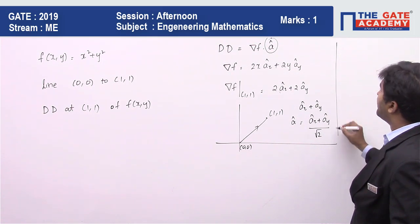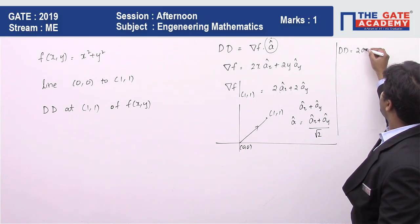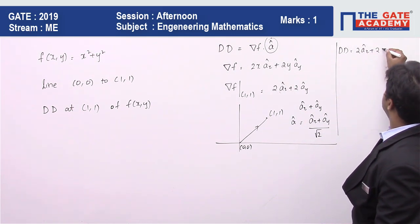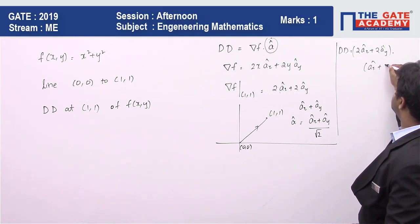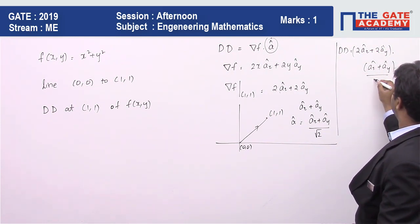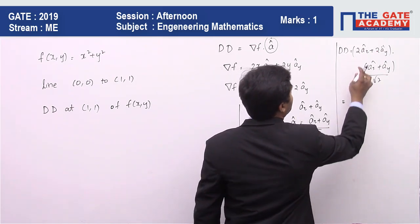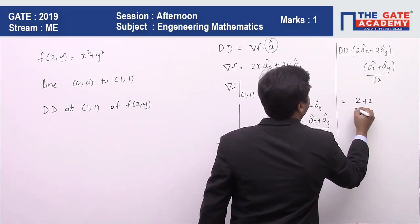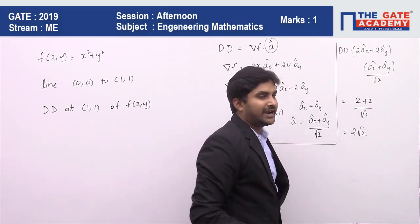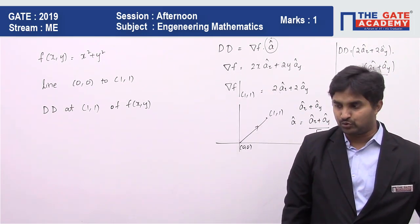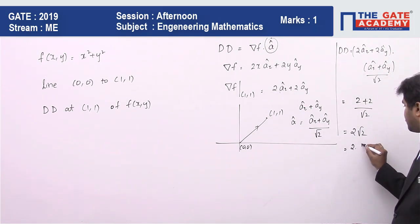So once you get the required, then directly we can find out the directional derivative, which equals (2ax + 2ay) · (ax + ay)/√2. So evaluating the value, it is (2 + 2)/√2, whose value is 2√2. The value of 2√2 equals 2.828.